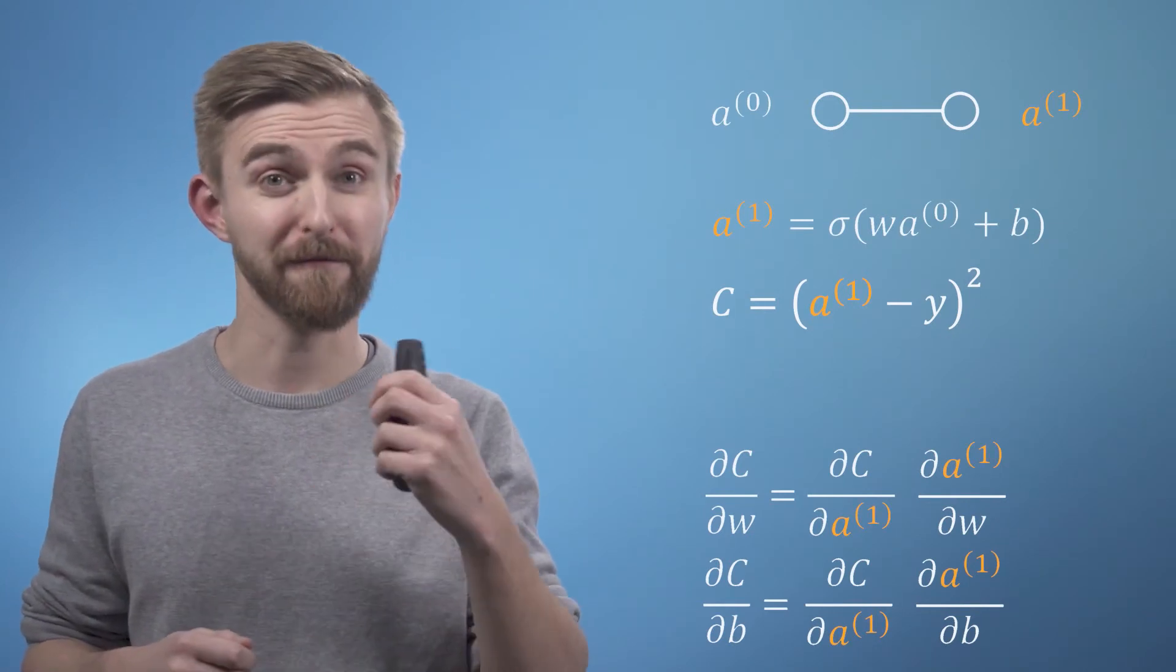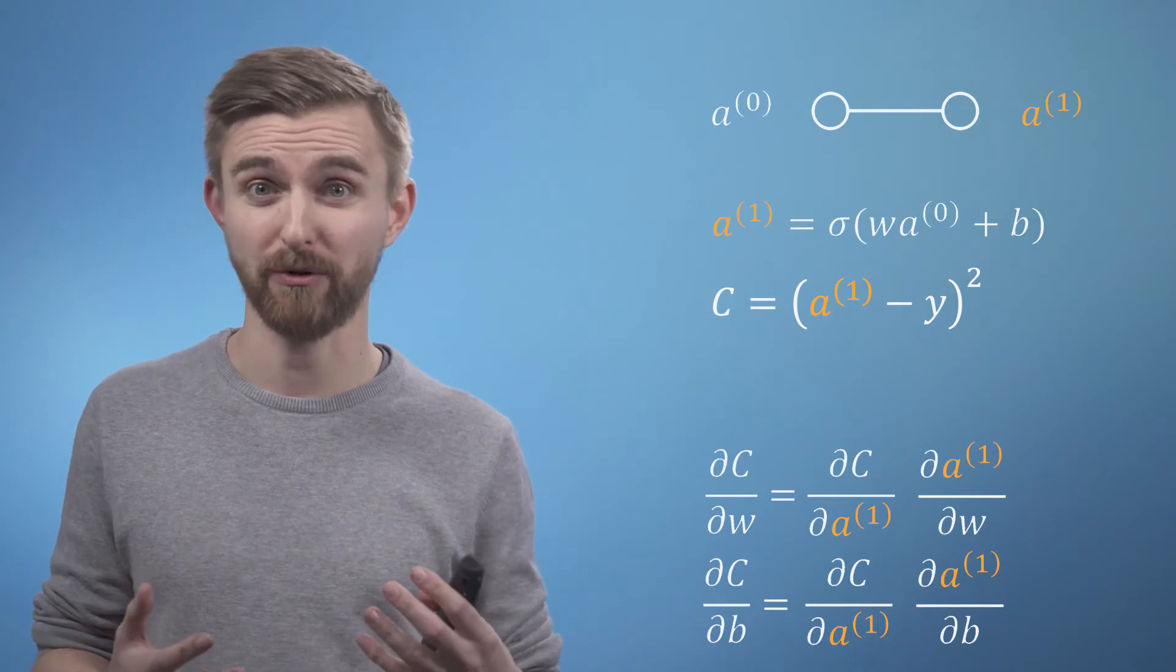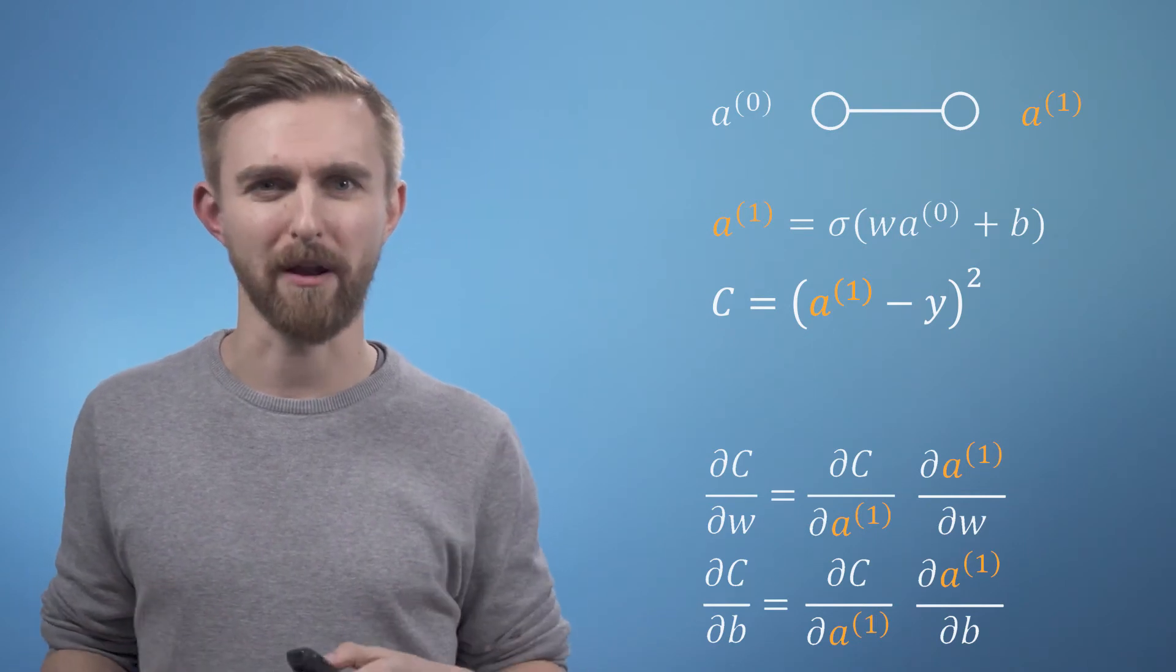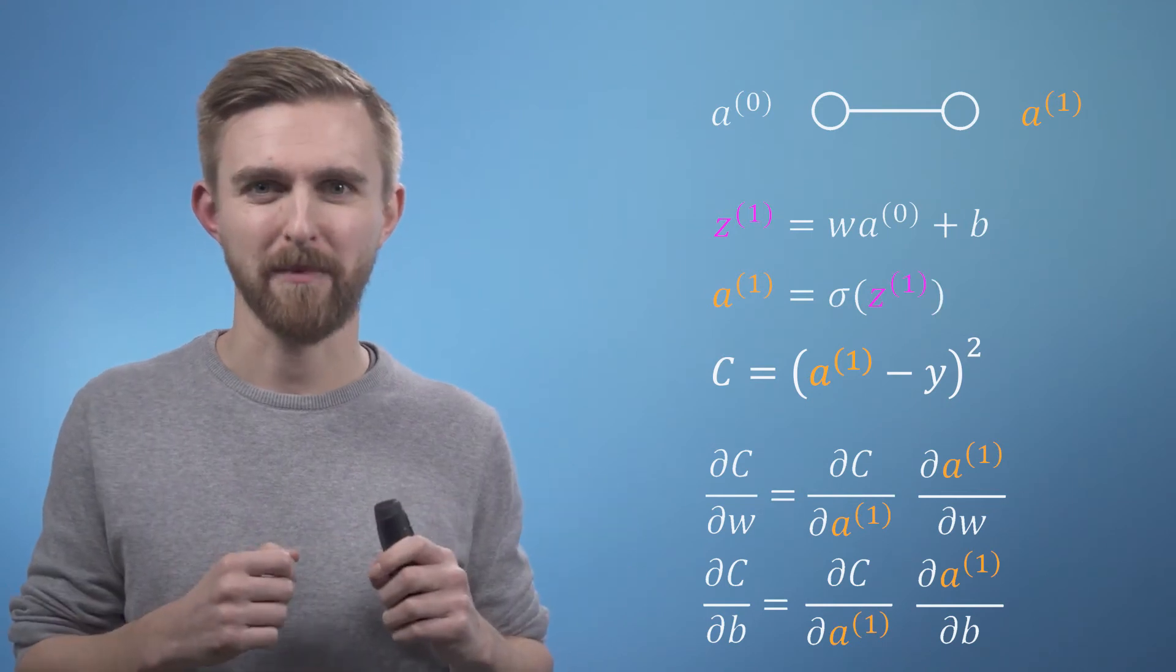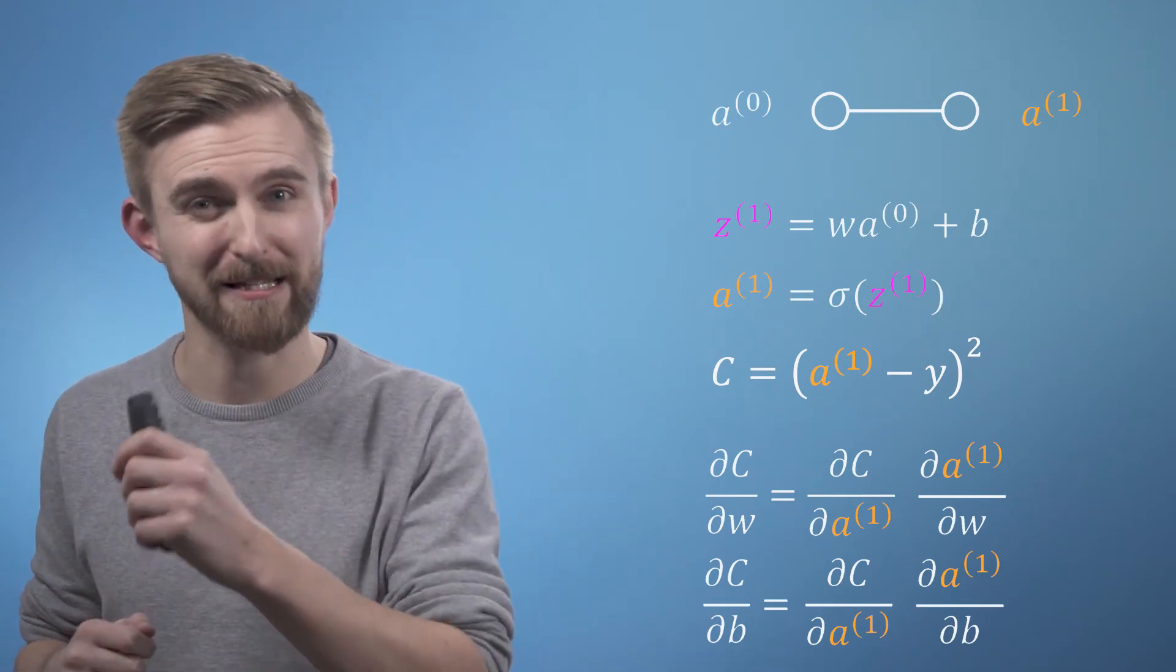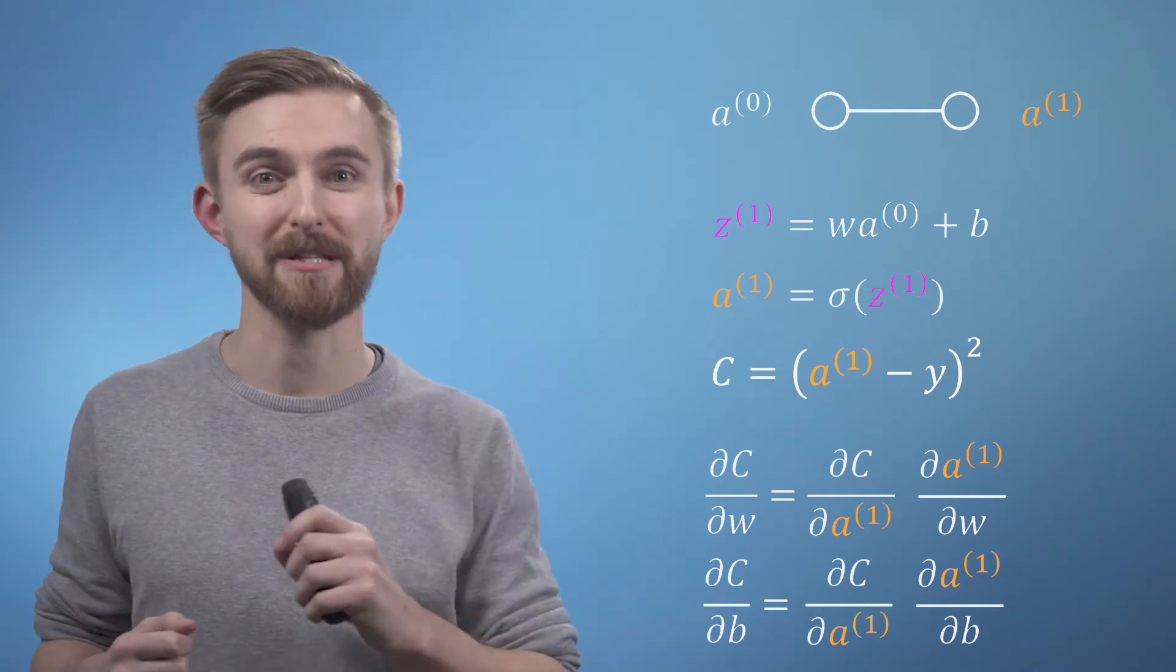However it's often convenient to make use of an additional term which we'll call z1 that will hold our weighted activation plus bias terms. This will allow us to think about differentiating the particular sigmoid function that we happen to choose separately.